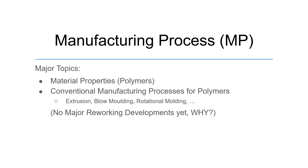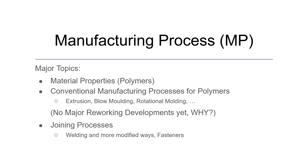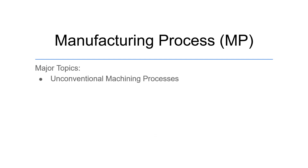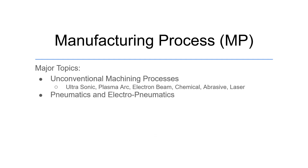There are generally no reworking processes for polymers because the cost of reworking would exceed the cost of raw material plus manufacturing — it's not worth investing time and resources when you can simply make a new part from scratch. Then we have joining processes, which are mainly related to metals. These include various forms of welding such as resistance welding and electric welding, as well as fasteners like screws, nuts, and bolts. This covers the conventional manufacturing side.